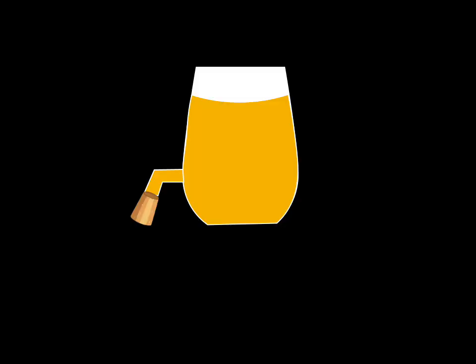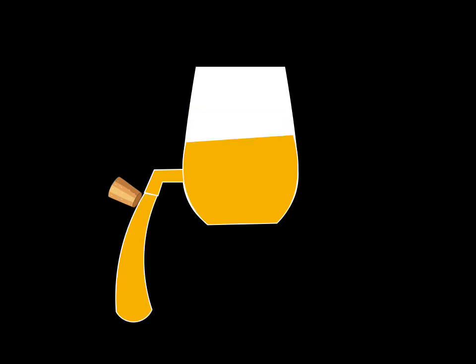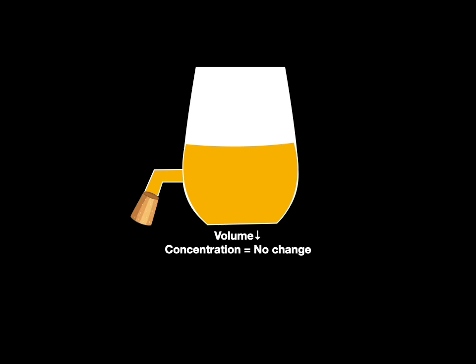Finally, let's take a jug of juice, open a cork, and let it drain. What happens to the volume and concentration? The volume will go down, but there's no change in concentration.